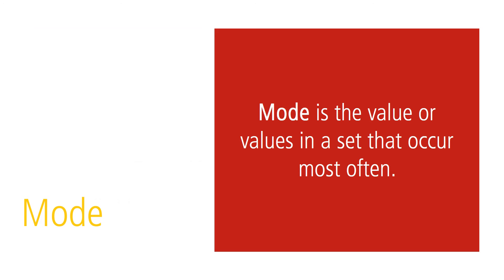The mode is the third measure of central tendency that we will consider. It is the value or values in a set that occur most often. It's possible for a set of data to have more than one mode or no mode at all.